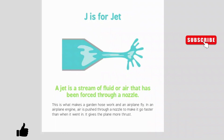J is for jet. A jet is a stream of fluid or air that has been forced through a nozzle. This is what makes the garden hose work and an airplane fly. In an airplane engine, air is pushed through a nozzle to make it go faster than when it went in. It gives the plane more thrust.